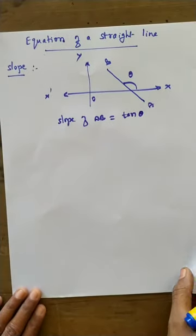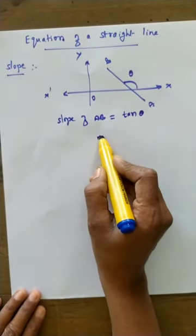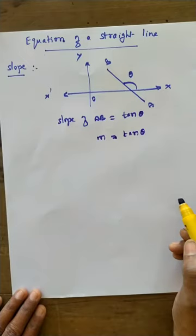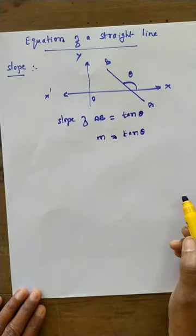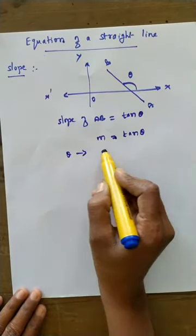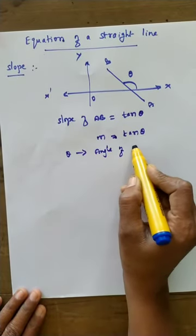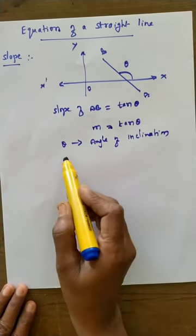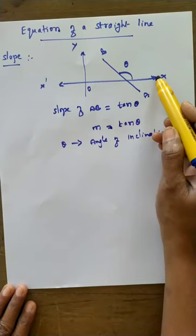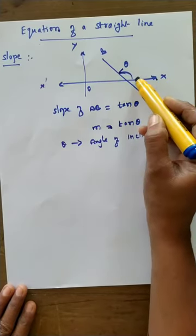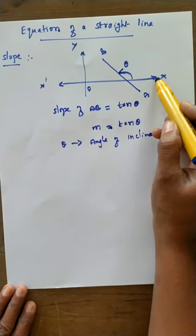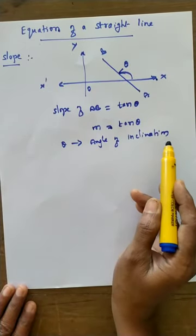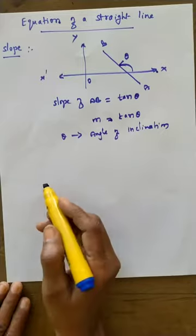So that is the definition studied in the last class. The slope of line AB is represented by the small letter M, where M is equal to tan θ. The angle θ is called the angle of inclination — that is, the angle between the straight line and the positive direction of the x-axis.